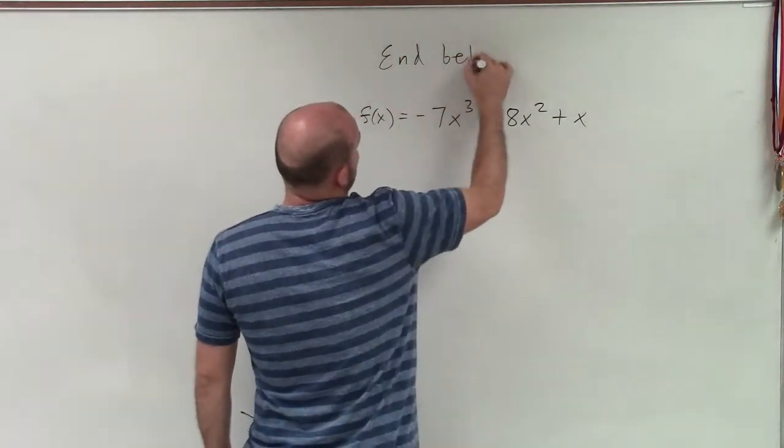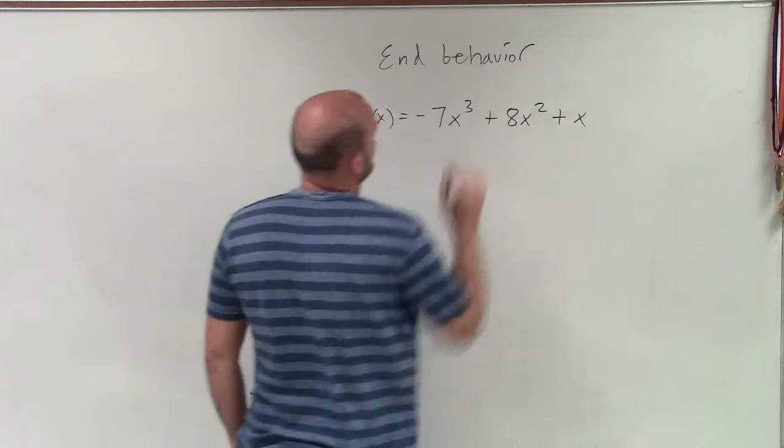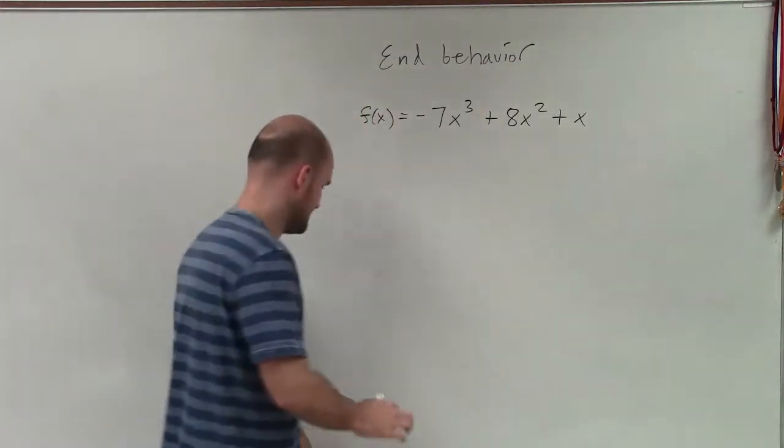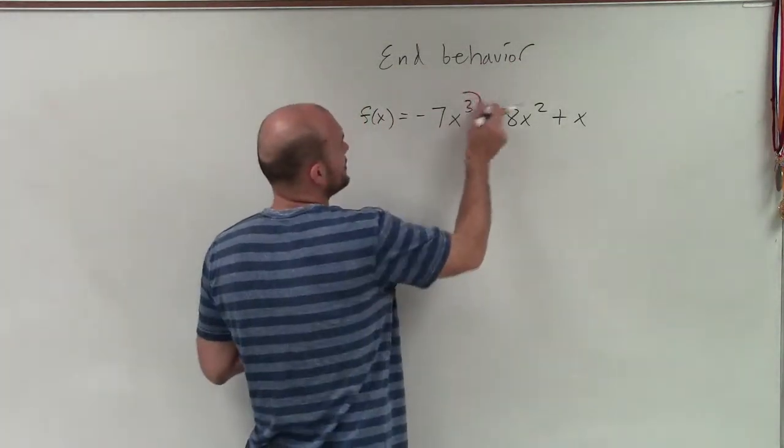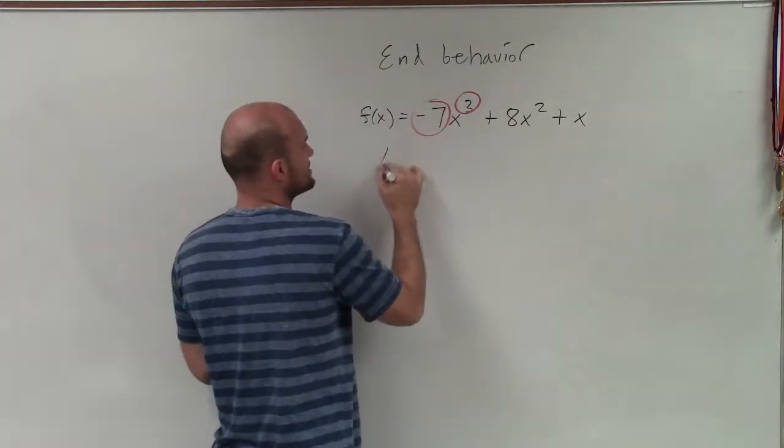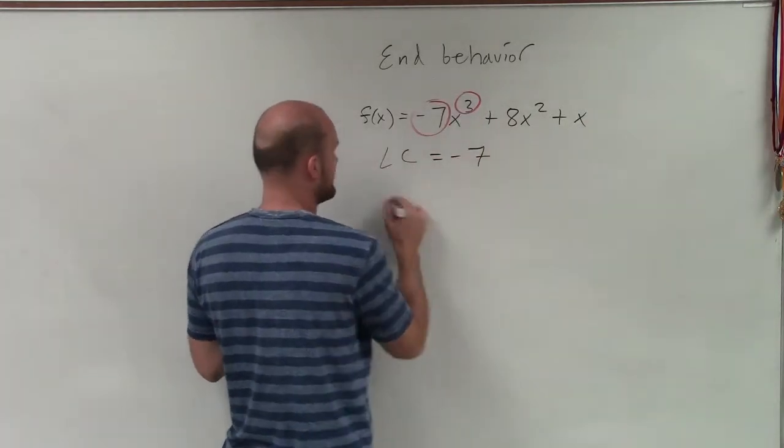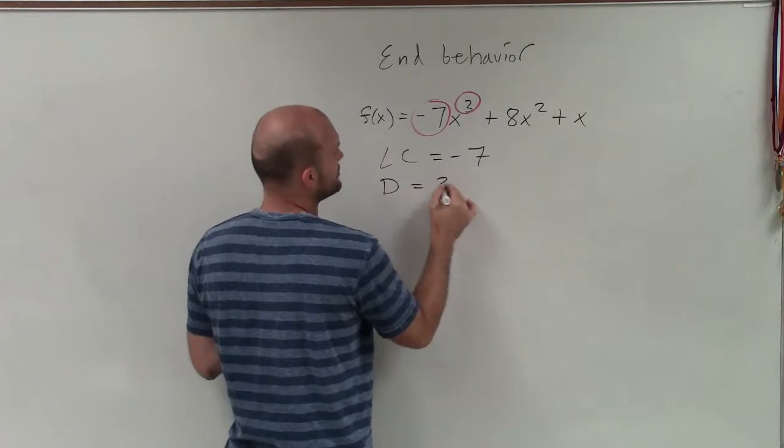So again, remember when we're looking at this, all we're going to be concerned about is two different points: one, the degree, and the leading coefficient. So we can say the leading coefficient equals negative 7, and the degree equals 3.